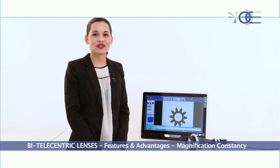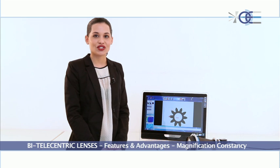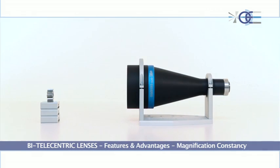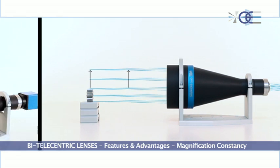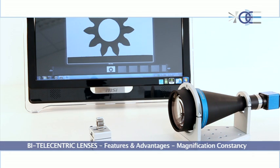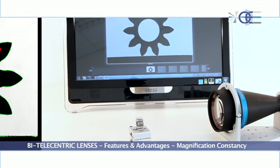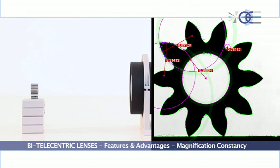Bi-telecentricity is one of Opto-Engineering's telecentric lens's key features. Rays not only come into the lens parallel to the optical axis, but also reach the detector in a parallel telecentric way.